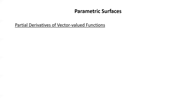Partial derivatives of vector-valued functions. Just like we could differentiate vector-valued functions with a single parameter, we can take partial derivatives of vector-valued functions with two parameters. The partial of r with respect to u is the partial of x with respect to u i plus the partial of y with respect to u j plus the partial of z with respect to u k — just differentiating component by component.